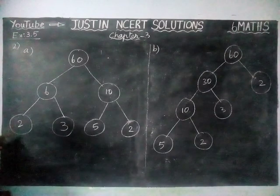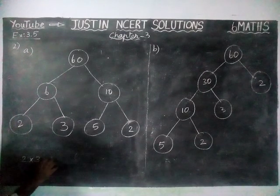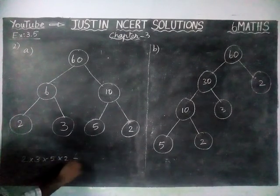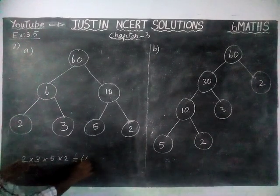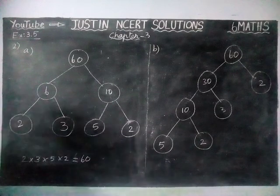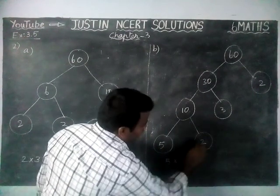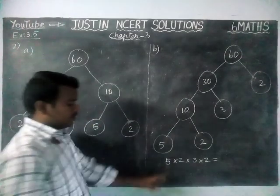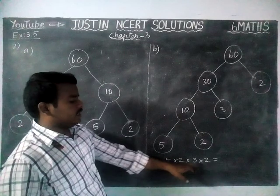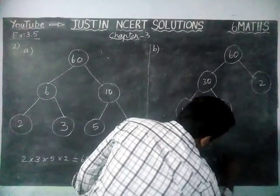Now we are going to check it. 2 × 3 × 5 × 2 is equal to: 2 threes are 6, 6 fives are 30, 30 twos are 60 — we are getting that answer. Now checking the other side: 5 × 2 × 3 × 2 is equal to: 5 twos are 10, 10 threes are 30, 30 twos are 60.